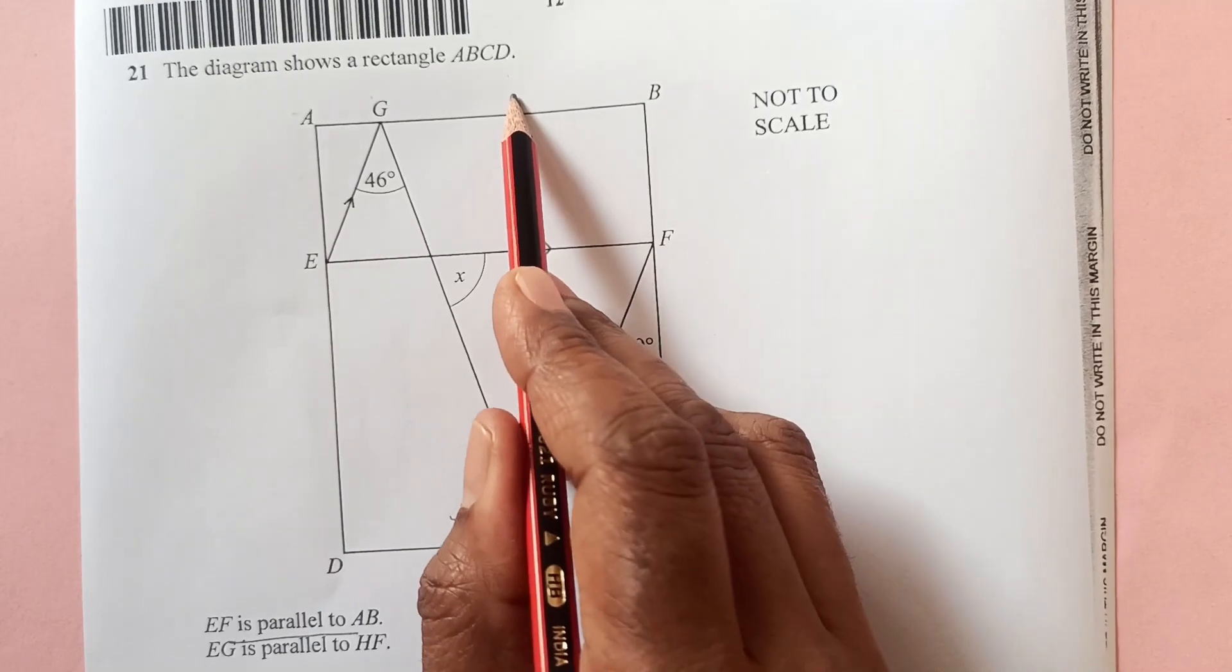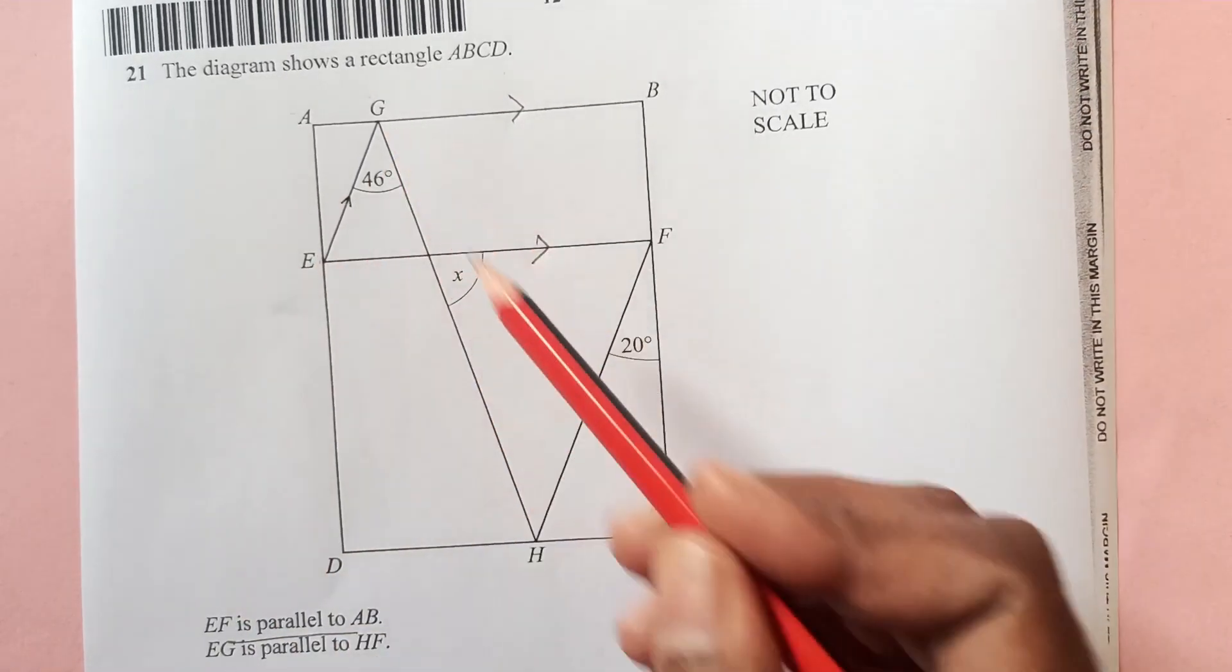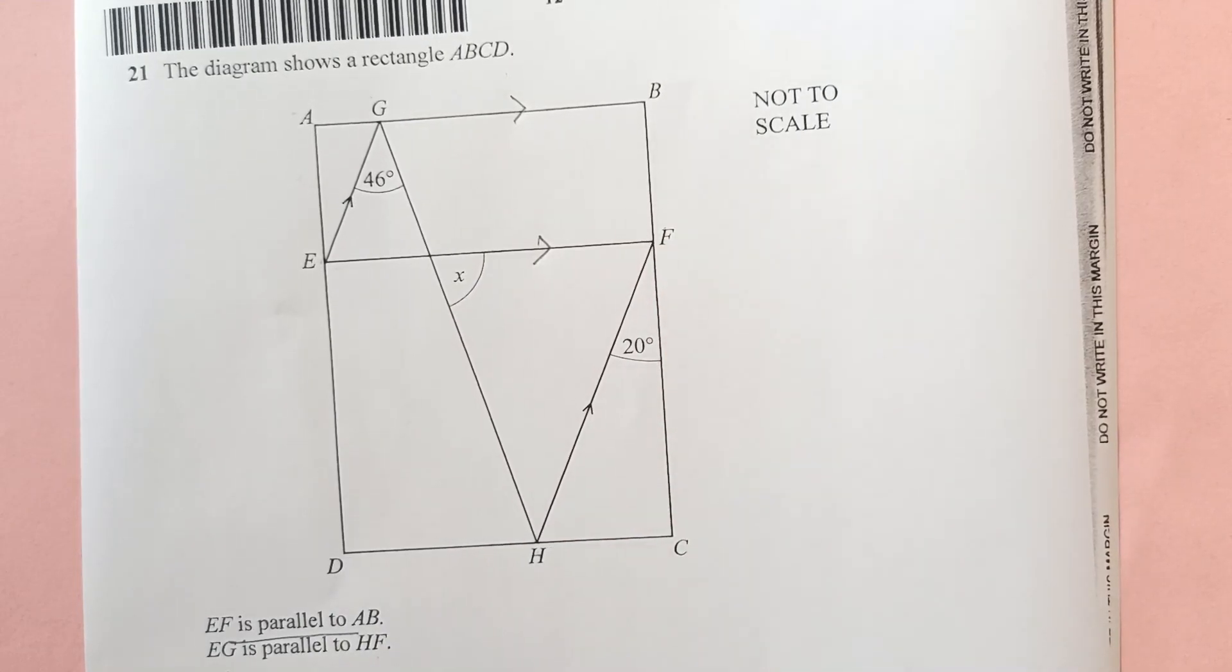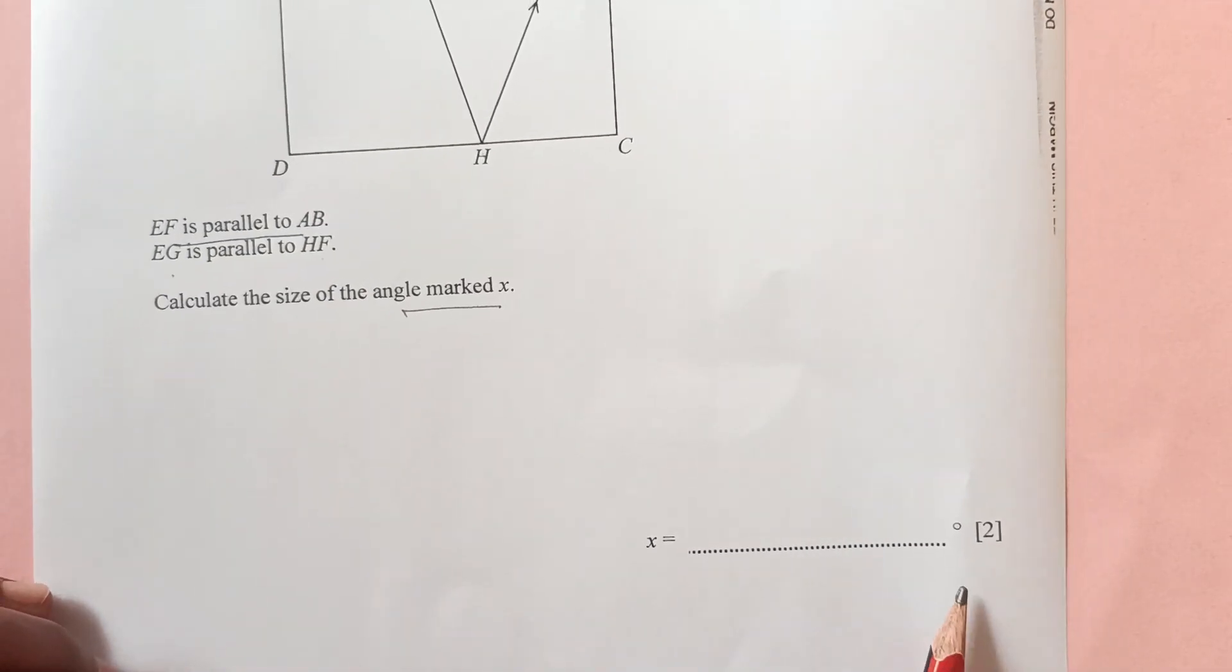EF is parallel to AB, right. And EG is parallel to HF. Calculate the size of angle marked x. So we are looking for this angle here. You see this is a two marks question but you need to put some effort.